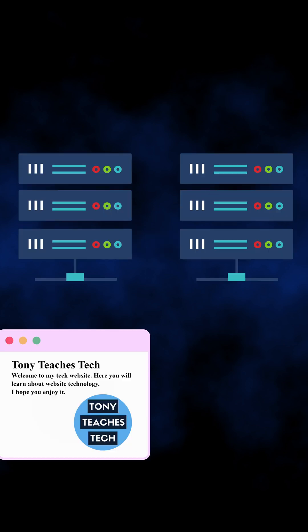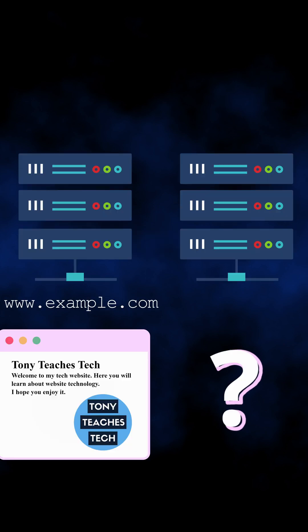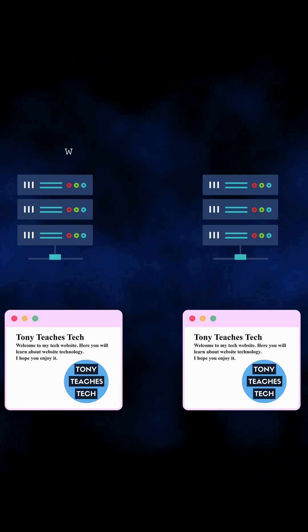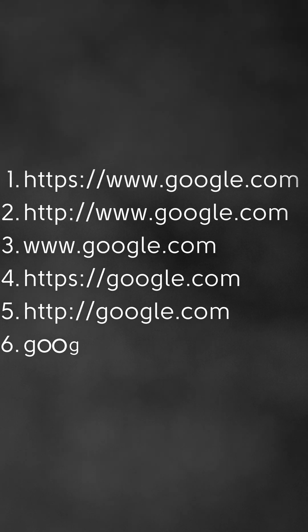But wait — what if you have a website at www.example.com? What's going on at example.com? Well, in most cases, it's the same exact thing. That's right, www.example.com is the same exact website as example.com. But it gets worse — all six of these URLs point to the same exact website, and the way that is possible is with something called a redirect.